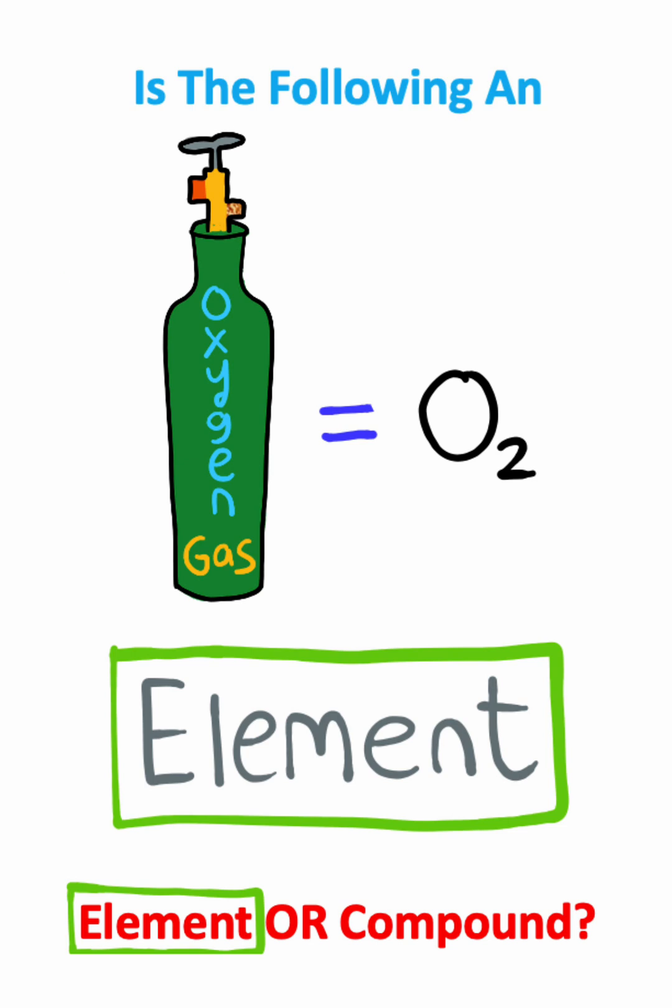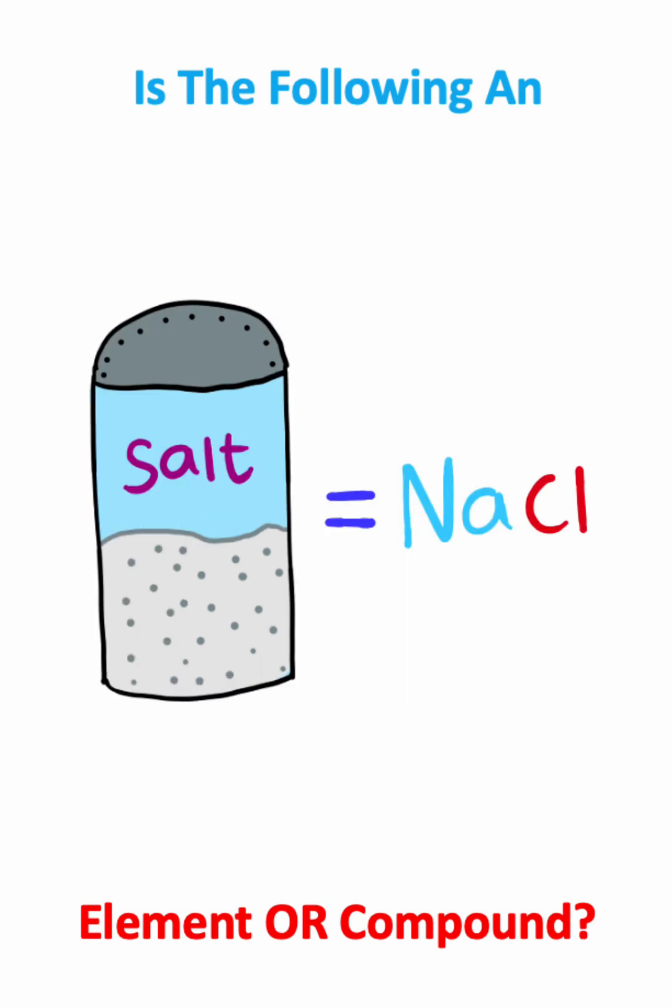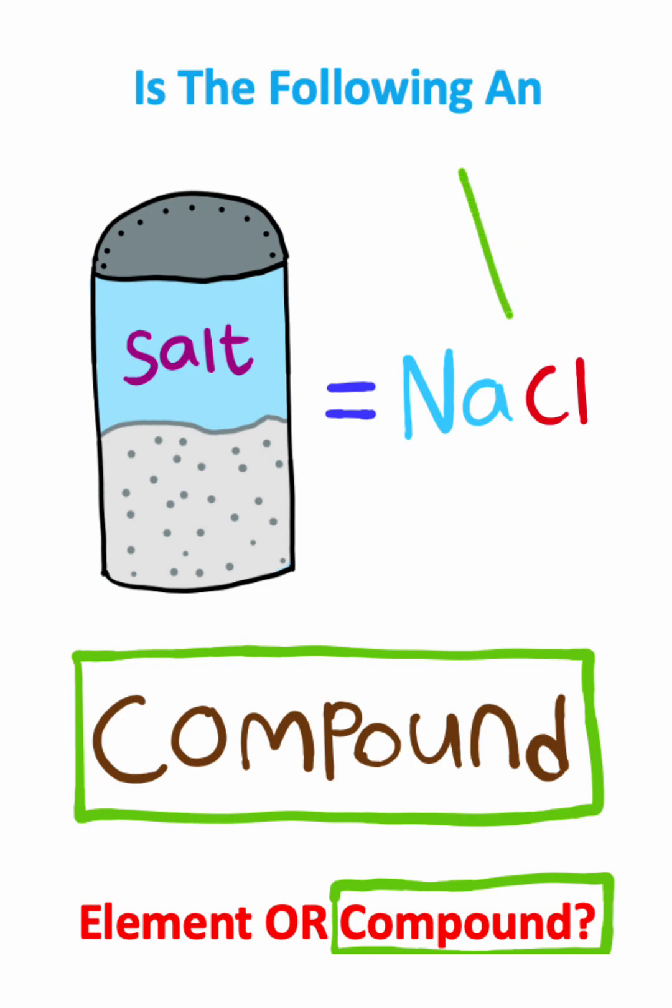Now for our last example, let's say we have table salt. Well table salt is the same thing as sodium chloride, and since we have sodium atoms and chlorine atoms, we would say that this is a compound.